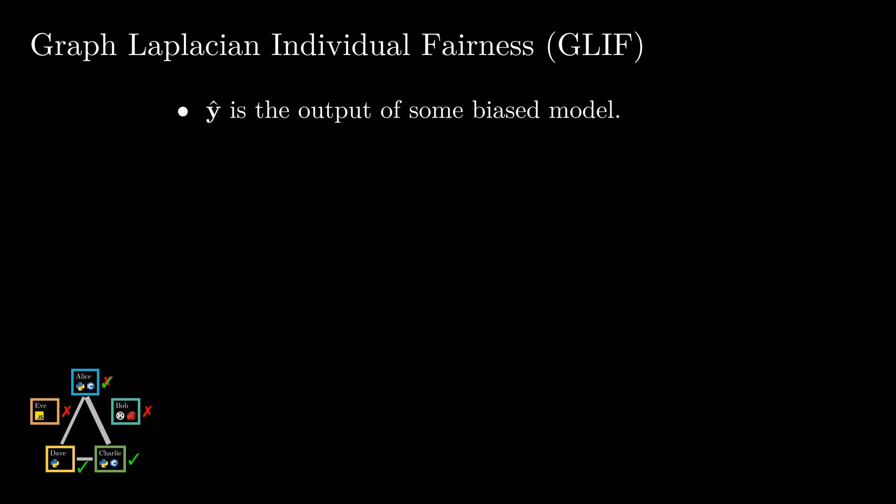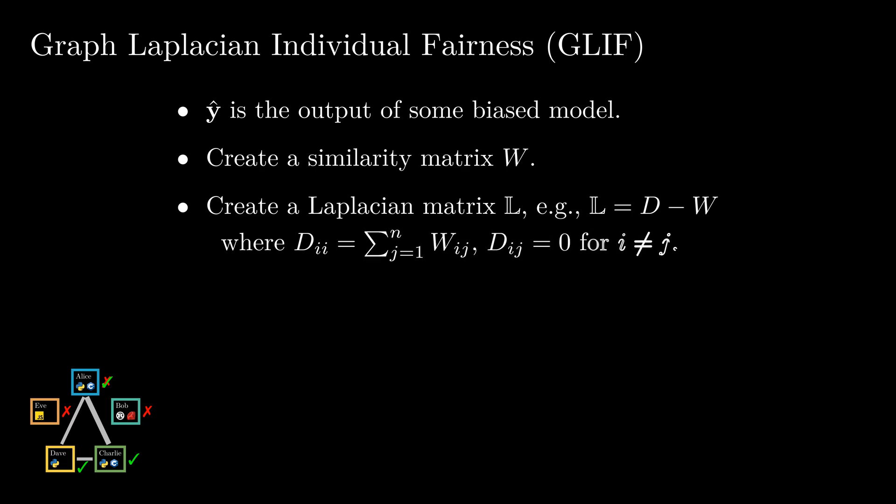Now, we will present our algorithm for post-processing, which we call Glyph for Graph-Laplacian individual fairness. Suppose Y hat is the output of some biased model that we want to post-process. We create a similarity matrix W, and from that create a Laplacian matrix L, for example via L equals D minus W, where D is the degree matrix.